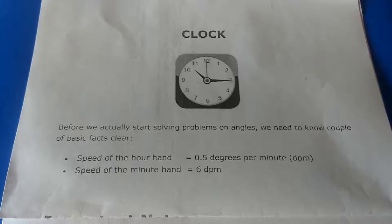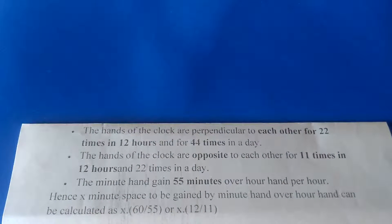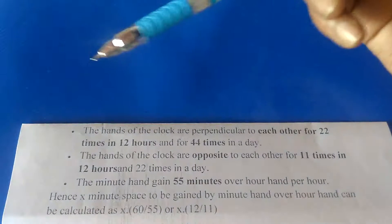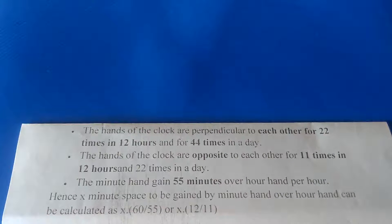Second, the hands of a clock are perpendicular to each other for 22 times in 12 hours and 44 times in a day. Between 2 and 3, the hands are perpendicular once.